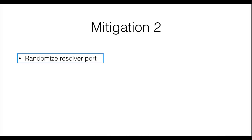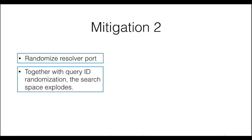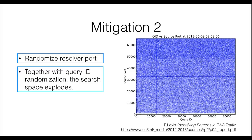If you are asking how this situation can be solved, a few considerations are important. First, as an immediate response once the attack was discovered, the resolver port was randomized. Together with query ID randomization, this blows up the number of tries an attacker needs to guess both a random query ID and a random port. A study conducted at the University of Amsterdam examined how query ID and ports are distributed in real DNS traces. The scatter plot on the right, based on data collected at one of the authoritative name servers in Surfnet, shows a good degree of randomization. However, the picture also shows that some patterns can occasionally emerge, like horizontal or vertical lines or higher density zones, suggesting that randomization mechanisms can occasionally fail or produce less entropy than expected.